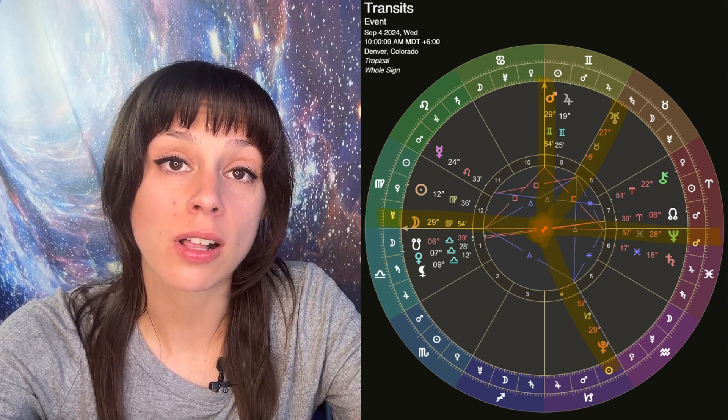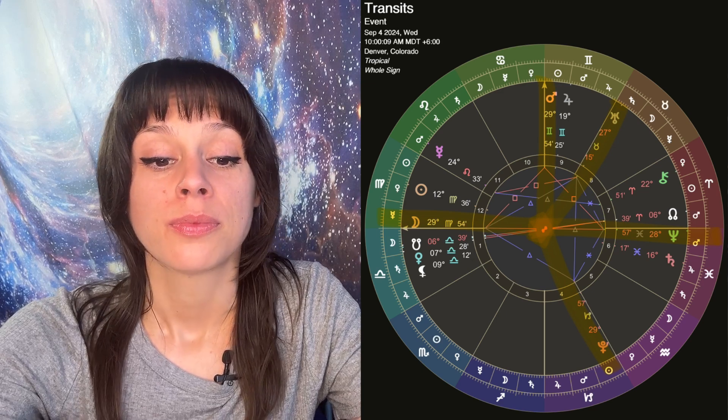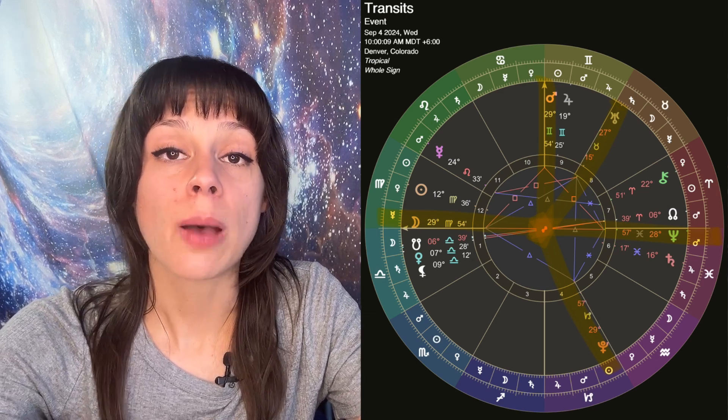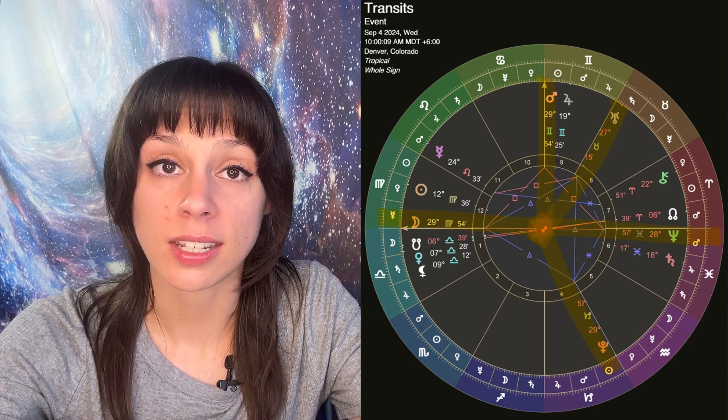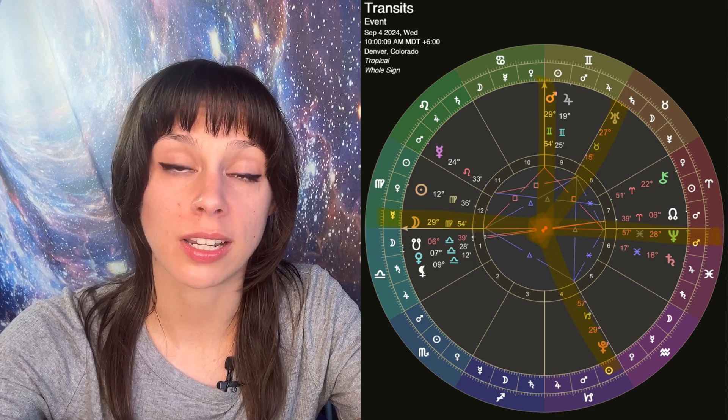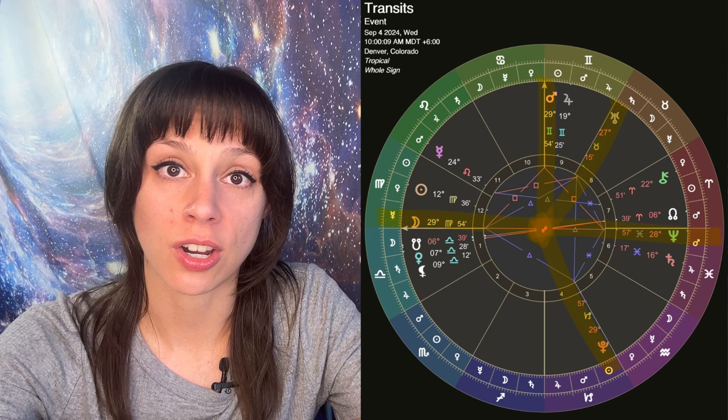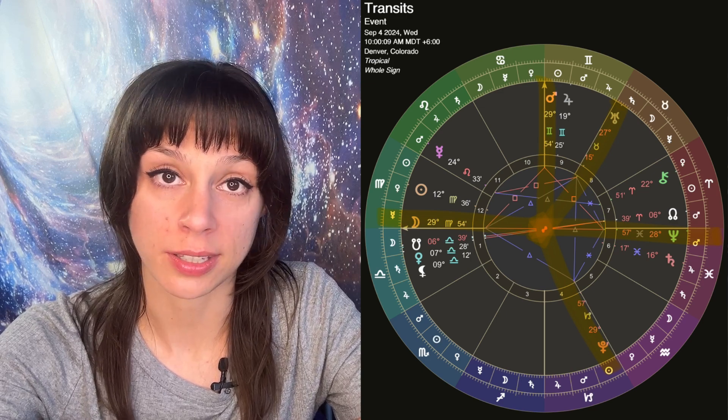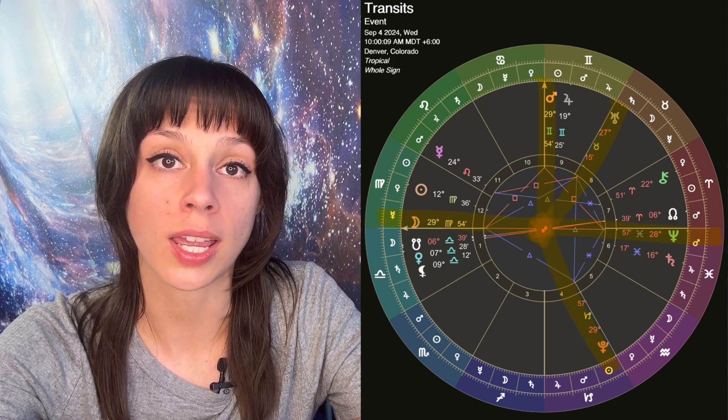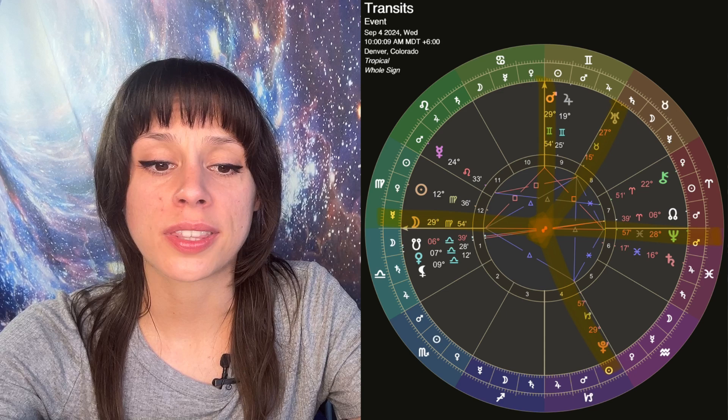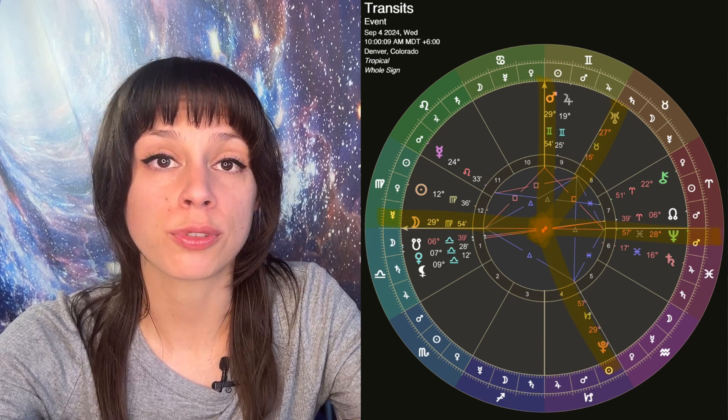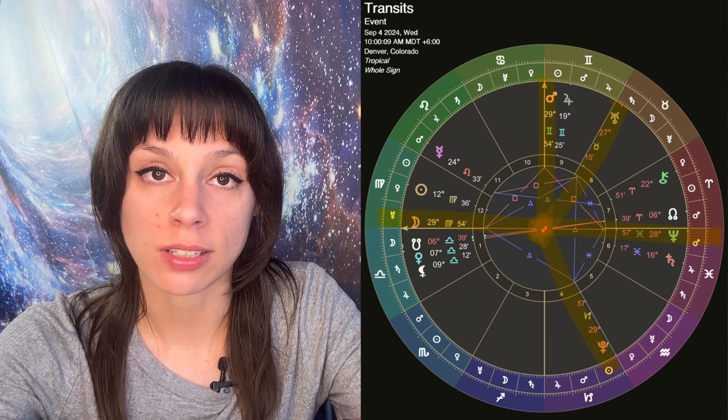Mars is in fall in Cancer. So that means in the opposite sign, Mars is exalted. It has a lot of privileges and honor and resources at its disposal. But when Mars is in Cancer, it doesn't have any honor or privilege or resources. So it has to find other ways to deal with life and to move through life and to take action.